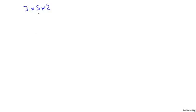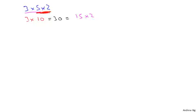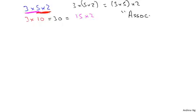Here's the next property I want to talk about. When dealing with scalars, let's say I have 3 times 5 times 2. I can either multiply 5 times 2 first and compute this as 3 times 10, or I can multiply 3 times 5 first and compute this as 15 times 2. Both of these give you the same answer — both equal 30. So it doesn't matter whether I multiply 5 times 2 first or 3 times 5 first. This is called the associative property of real number multiplication.